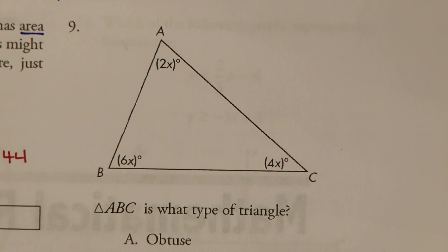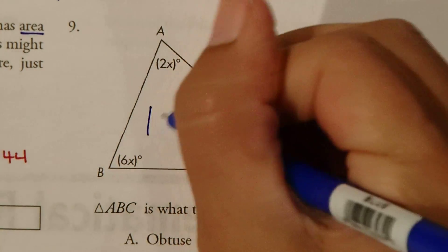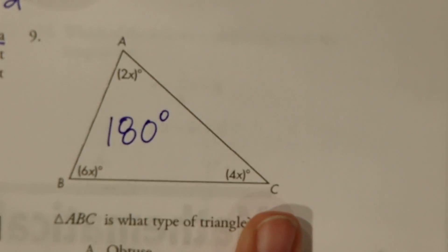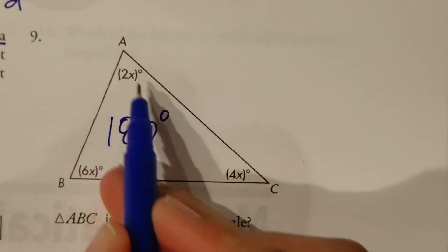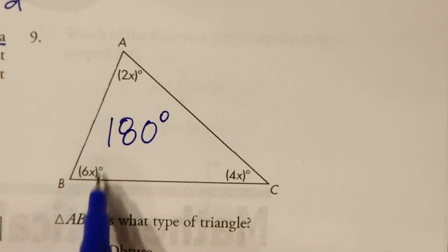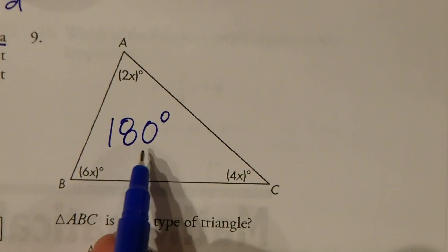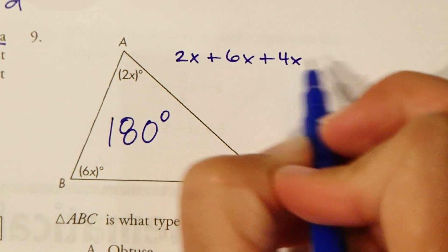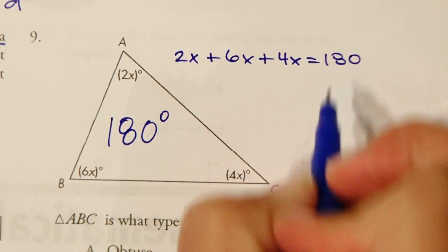So we need to solve and find what these angle measures are equal to. The way we'll do that is we know that a triangle has 180 degrees. This is always the case. So what we can do is solve for these x values by adding them all together, because we know whatever this is plus this plus this has to equal 180.